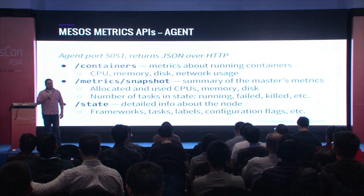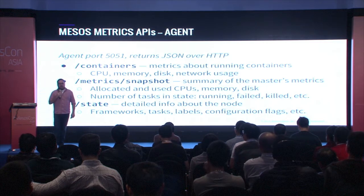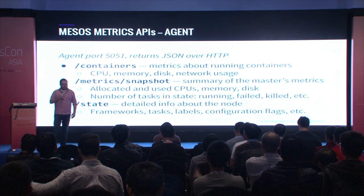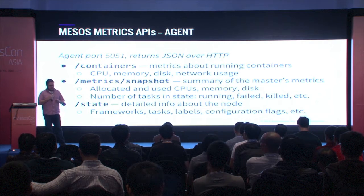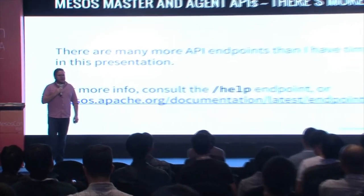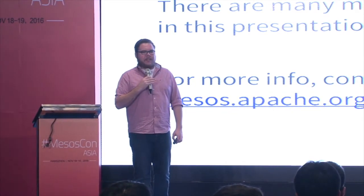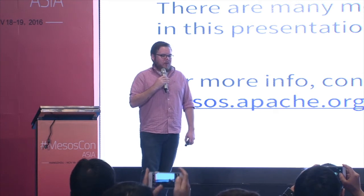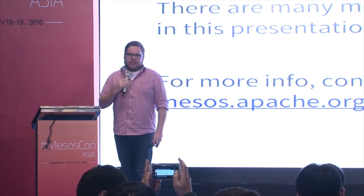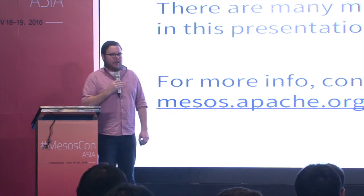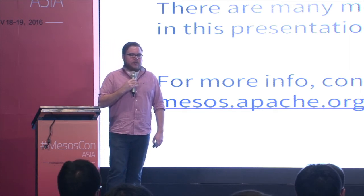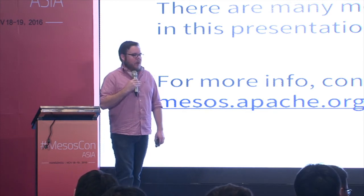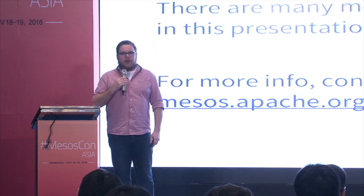The state endpoint provides detailed information about a specific node: what frameworks are running tasks on that agent, what labels are associated with those tasks, what configuration flags are present. There are dozens of different API endpoints available. One available on both masters and agents is the /help endpoint, which details all available endpoints and what response you can expect. You can query those on either the master or agent for your specific version of Mesos, or visit mesos.apache.org for documentation on the latest version.